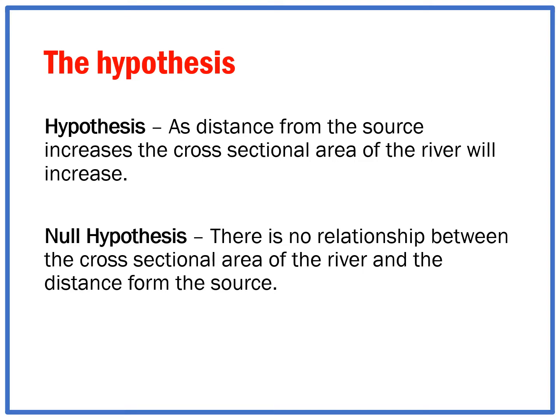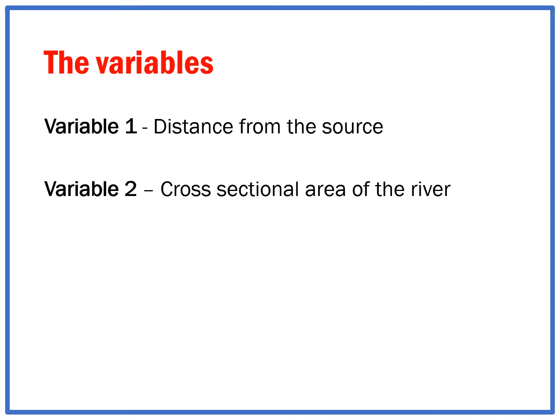We are doing a river investigation. My hypothesis is: as the distance from the source increases, the cross-sectional area of the river will increase. My null hypothesis is that there is no relationship between the cross-sectional area of the river and the distance from the source. Variable one is the distance from the source, and variable two is the cross-sectional area of the river.